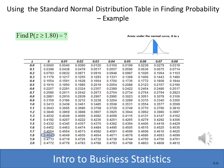We found Z = 1.8, and we want the probability of getting a Z greater than or equal to 1.8. Using the table, the probability associated with Z = 1.8 is 0.4641. Let's go to the next slide to see what that actually means.